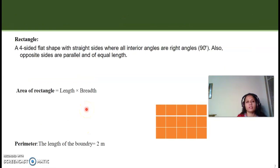Another thing that your students should know is rectangle. A 4 sided flat shape with straight sides where all interior angles are right angles. Also, opposite angles are parallel and of equal length. Here, we have the area of rectangle which is given by the formula, length into breadth. And the third thing that you need to know is perimeter. Perimeter is the length of the boundary, which in this case is 24 meters.